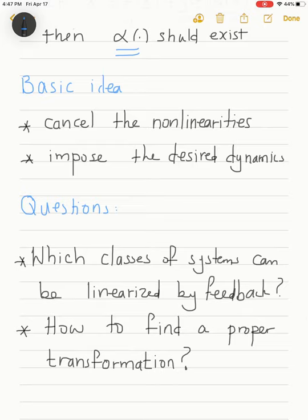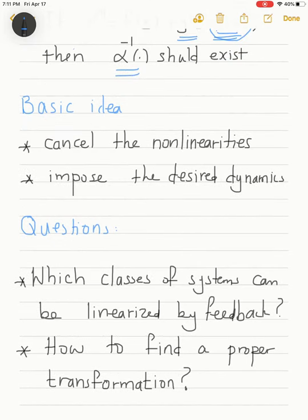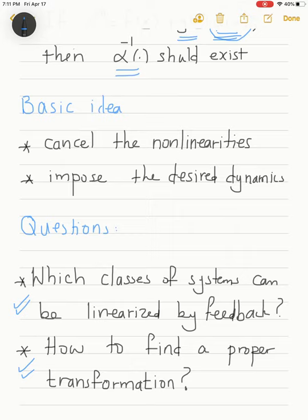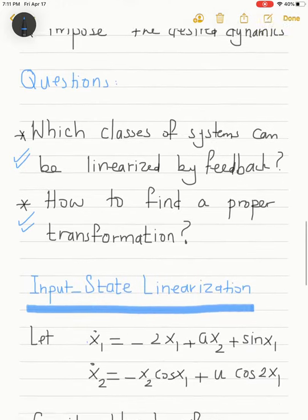Another question is: if that conversion is possible, what transformation do we use to bring a given system from its original model to the required companion form, and consequently design a controller? To answer whether a system can be put in linear form, we need background in differential geometry. We will address that at the end of our lecture series, but for now we'll see an introduction to input-state and input-output linearization.